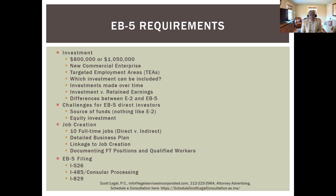What differentiates the $800,000 from the $1,050,000 is the location of the enterprise. If it is in a targeted employment area — defined as an area where the unemployment rate is 1.5 times the national average — the lower investment amount applies. A rural area, defined by lower population numbers at the local jurisdiction level, also qualifies for the lower amount. Everything else is $1,050,000.